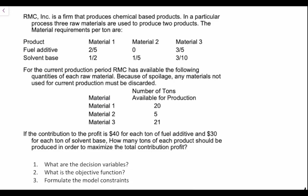For the current production, RMC has available the following quantities of each raw material. Because of spoilage, any material not used for the current production must be discarded. Material one has 20 tons, material two has five tons, material three has 21 tons. If the contribution to profit is $40 for each ton of fuel additive and $30 for each ton of solvent base, how many tons of each product should be produced in order to maximize the total contribution profit?